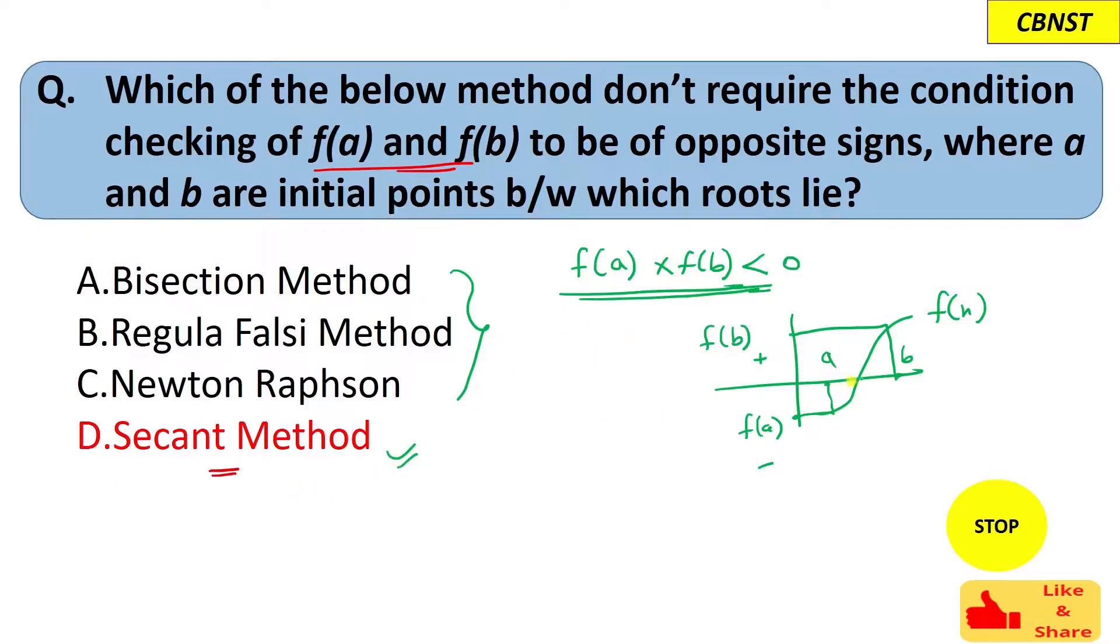For secant method, a and b can be something like a can be this and b can be here also. Both f(a) and f(b) can be of same sign or opposite sign. Secant method does not need this condition to be true, so that's why option D is correct.